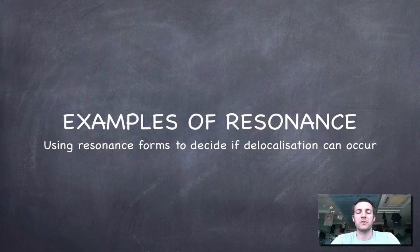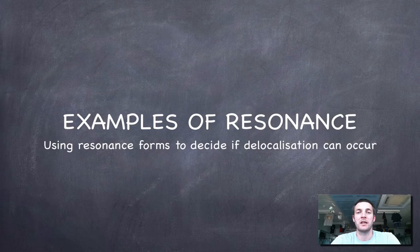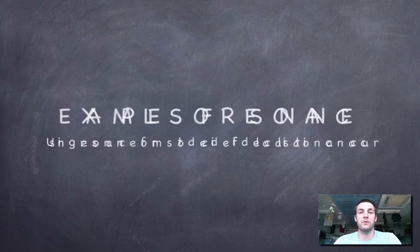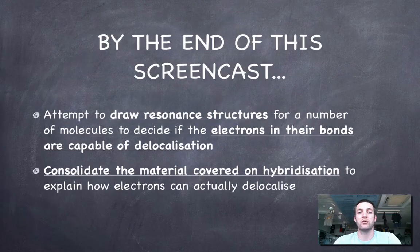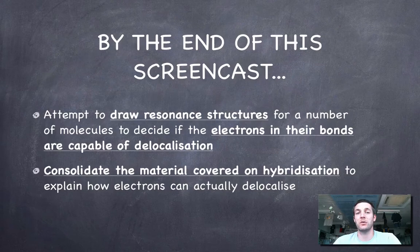Hello and welcome to this film, which is the last of the films about the high-level bonding topic in the IB Chemistry course. This deals with some examples of resonance, so it's dealing with specific examples of this thing that we were looking at in the previous film where we looked at resonance and delocalisation. What we're hopefully going to be able to do by the end of this particular film is to draw resonance structures for a number of different molecules and decide whether the electrons in those molecules can delocalise. And hopefully we'll actually consolidate what we did on hybridisation as well at the same time.